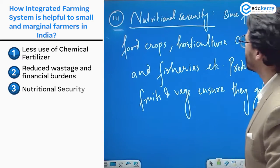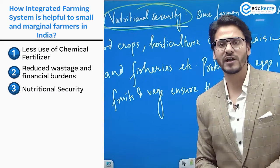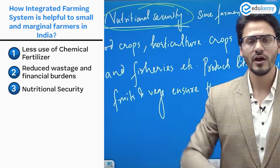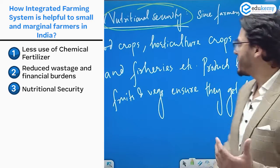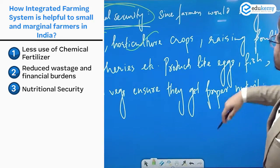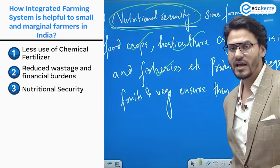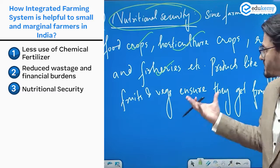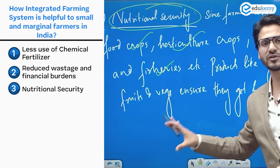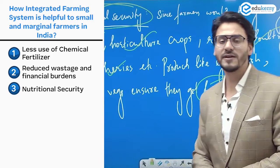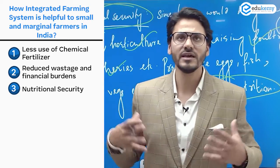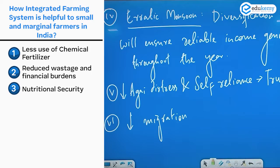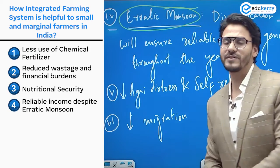Number three: nutritional security. Since the farmer is not focusing on a single crop but has a diversified system with multiple crops — food crops, horticulture, poultry, and fisheries — they will have eggs, fruits, vegetables, and various products, ensuring proper nutrition for the farming family itself.